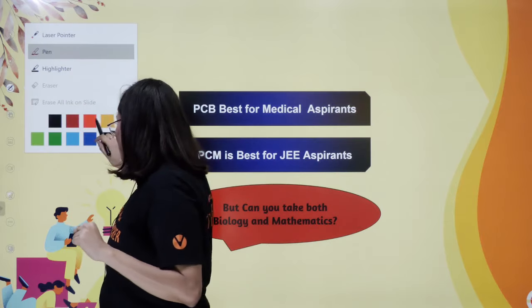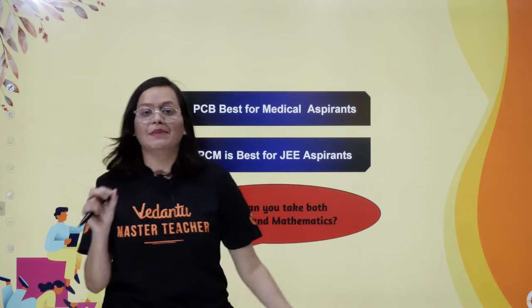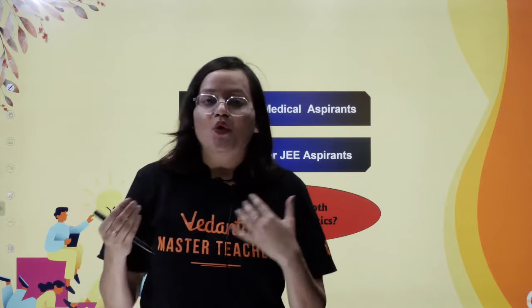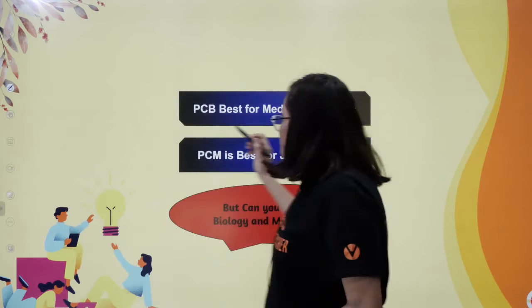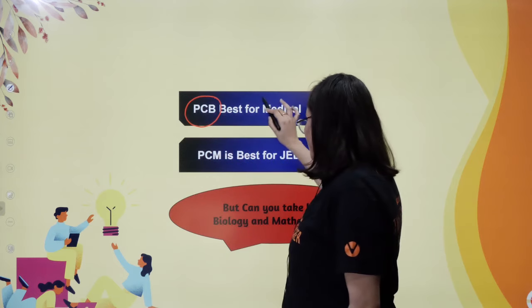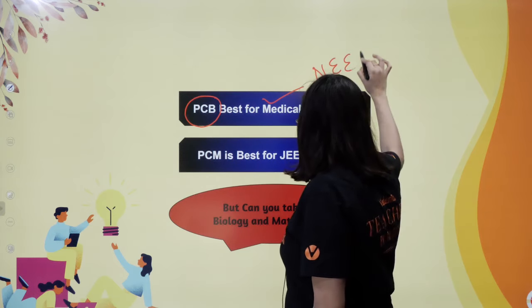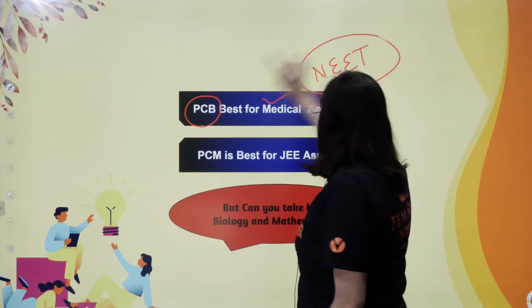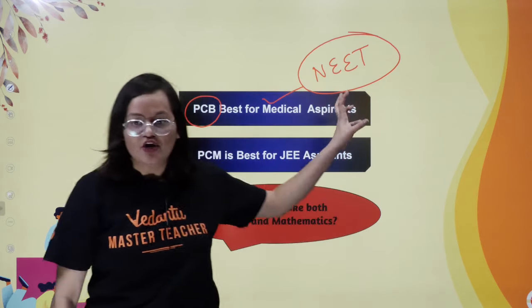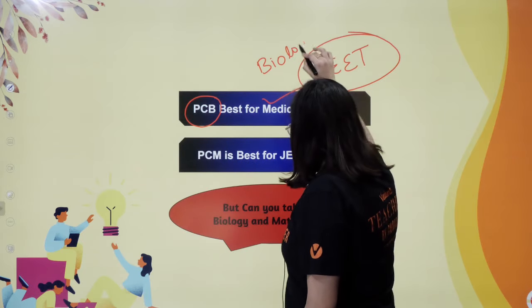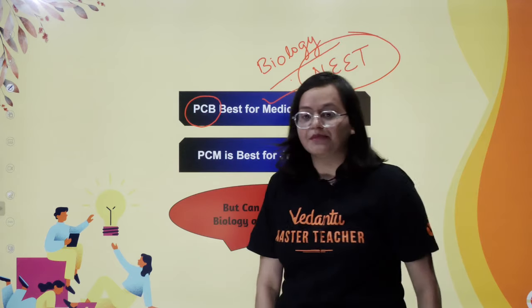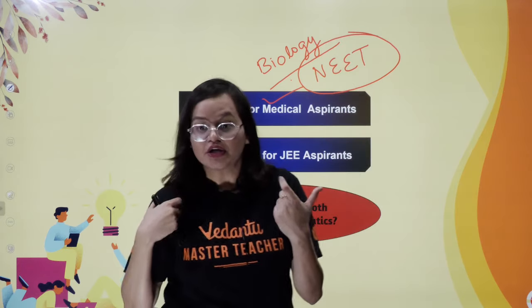Now, there are some things that matter here — first, what is your interest? If becoming a doctor is crystal clear in your mind, you can take the combination of PCB and go ahead. PCMB — Physics, Chemistry, and Biology — is very good for medical aspirants. You can prepare properly for NEET. This is a really good combo if you like to work in healthcare and want to be a doctor.